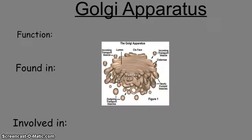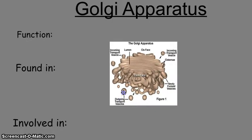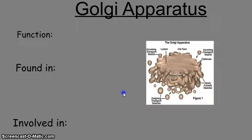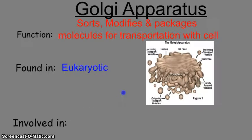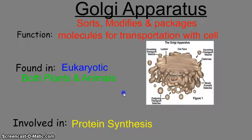The Golgi apparatus is often found near the endoplasmic reticulum and near the cell membrane. Its job is to sort, modify, and package molecules for transportation within the cell and externally to surrounding cells — like a conveyor belt going in one way and out the other. It is found in eukaryotic cells only, in both plants and animals, and it's involved in protein synthesis.